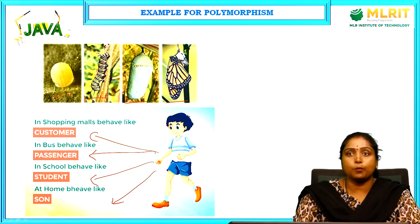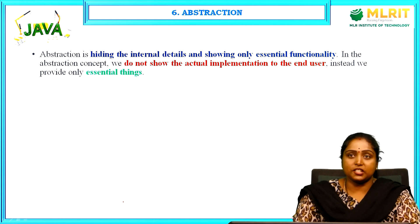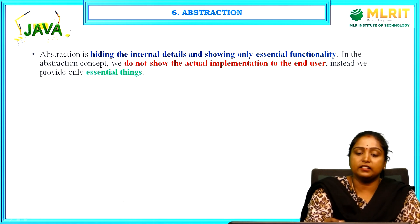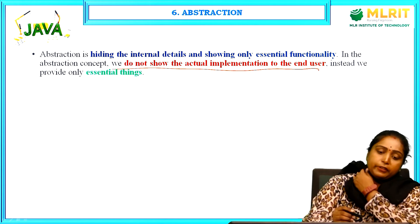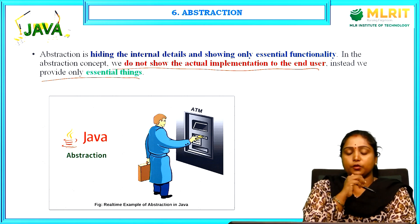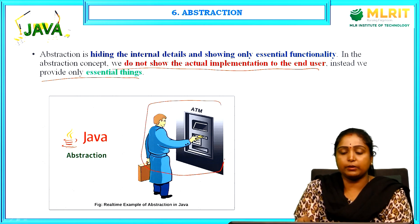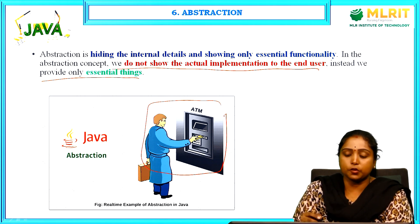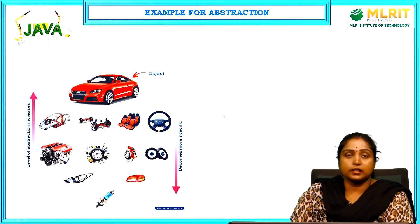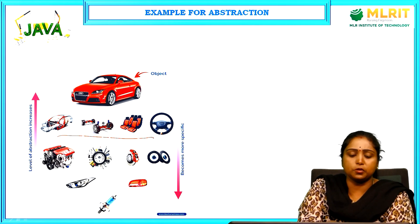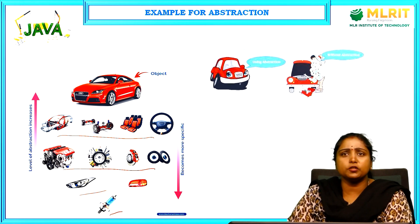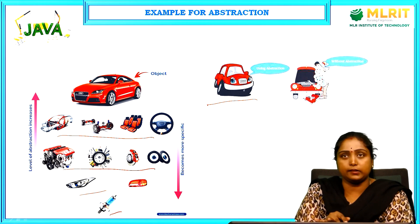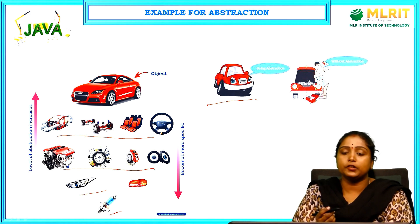Abstraction means hiding the internal details and showing only the essential functionality. We do not show the actual implementation to the end user; instead we provide only the essential things. For example, at an ATM you perform transactions, but you do not know what is happening internally — the internal functionality is hidden while the essential functionality is accessible. Similarly, you know how to use the parts of a car, but you do not know how the music system or motor works internally. Hiding data and showing only essential functionality is called abstraction.